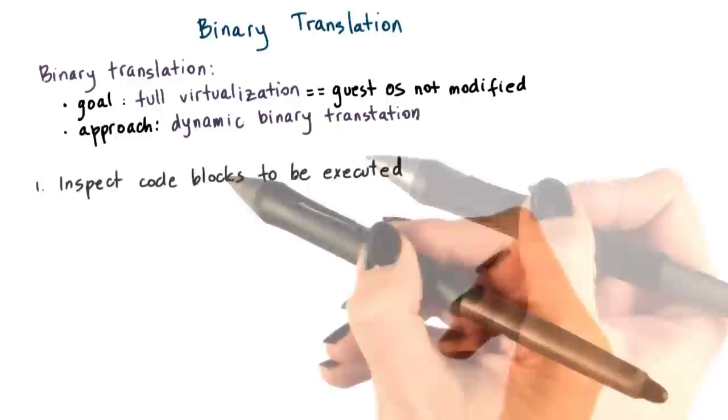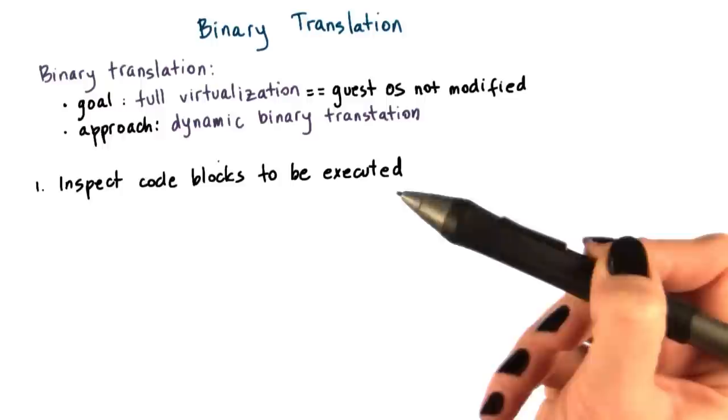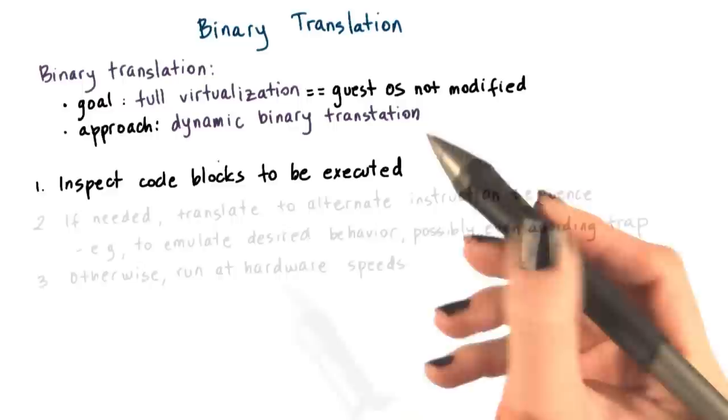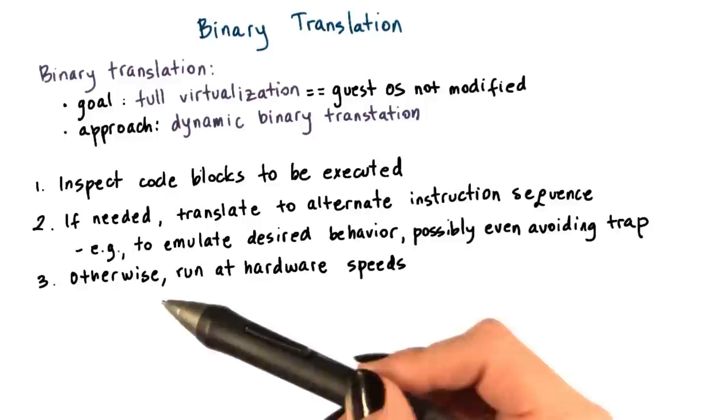You dynamically capture these code blocks and inspect them to see whether any of these 17 infamous instructions is about to be issued. If the code block doesn't have any of these bad instructions, it's marked as safe and allowed to execute natively at hardware speeds.